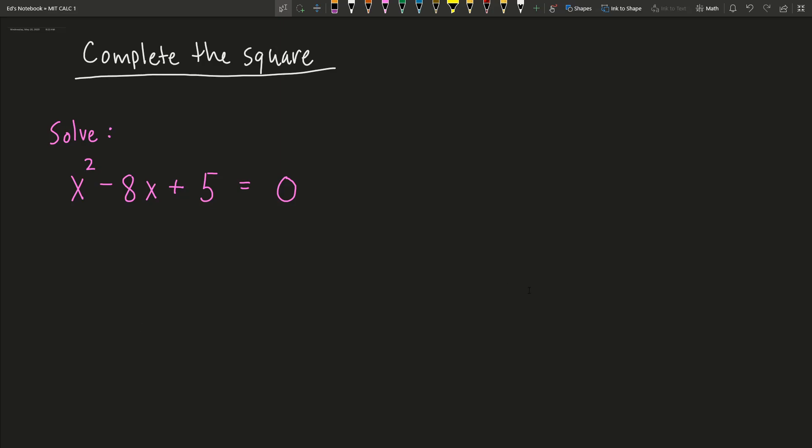All right, welcome class. I wanted to do a video on going through the process of completing the square with an example problem. So I have the problem here. It's x² - 8x + 5 = 0.